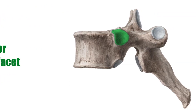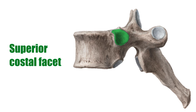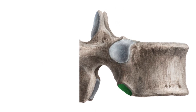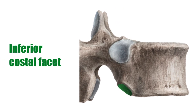The superior costal facet, seen here highlighted in green on this image of the lateral view of the vertebrae, is a fossa where the head of the rib articulates. The inferior costal facet also articulates with the head of a rib; however, it is located on the lower edge of the body of the vertebra. The costal facet of the transverse process of the vertebra is a facet for articulation of the vertebra with the tubercle of the rib.